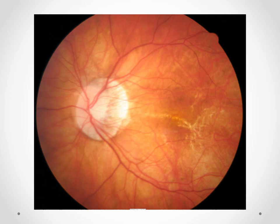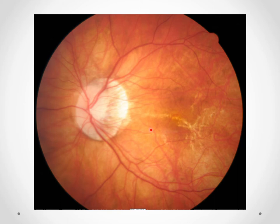This is a myopic crescent, which is a white crescent area located on the temporal side of the optic disc. It is caused by atrophy of the choroid, allowing the sclera to become more visible. It's always on the temporal side because the papillary bundles of nerve fibers are the thinnest there.